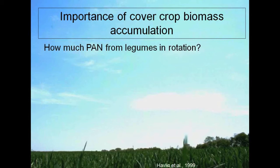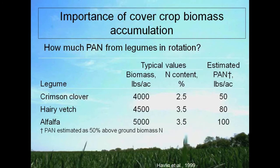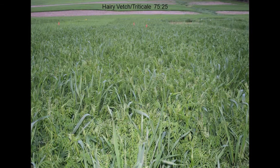The same importance on biomass accumulation goes for legumes in rotations, where we're expecting the legume to add nitrogen back to the system. We have here a number of common legumes used in cover cropping systems and the expected biomass in a good stand. At this biomass, we can estimate that these cover crops can provide 50 to 100 pounds per acre of plant-available nitrogen. As biomass numbers decrease, this contribution of nitrogen into the system decreases as well — reiterating the importance of proper biomass accumulation.